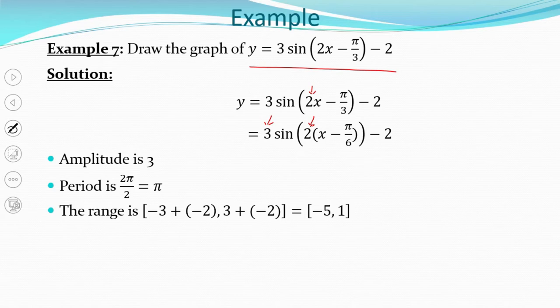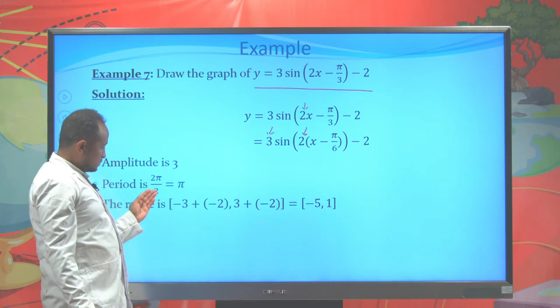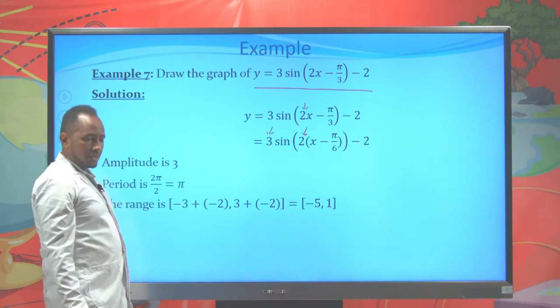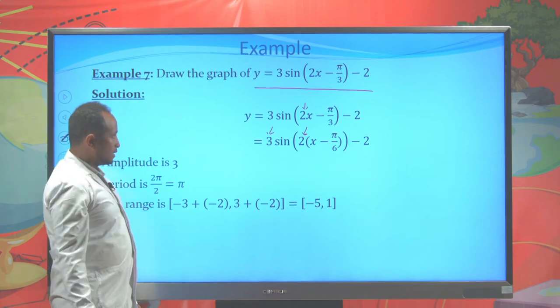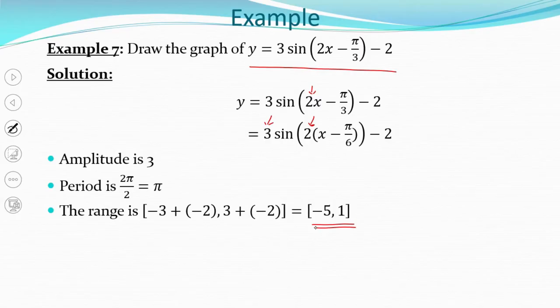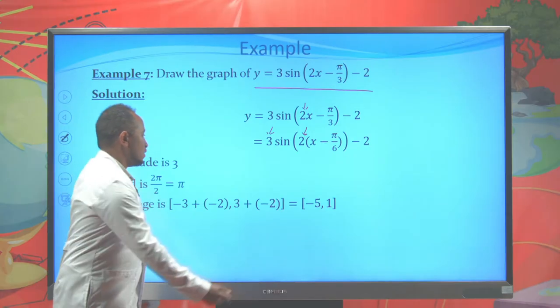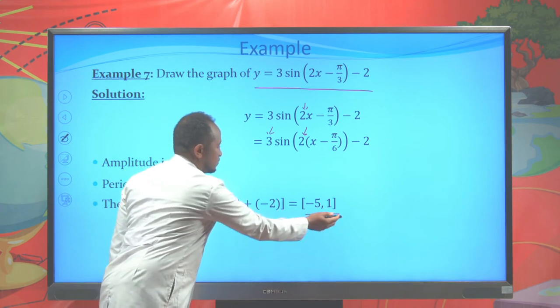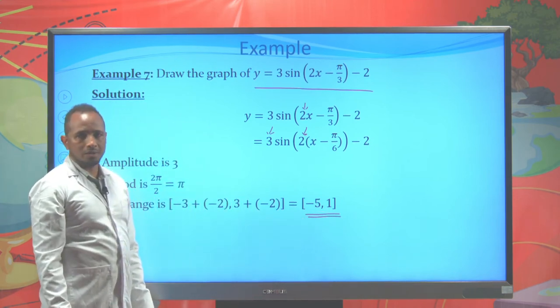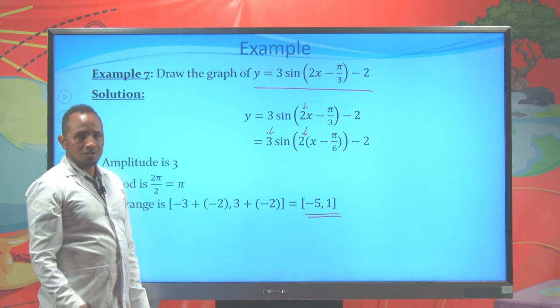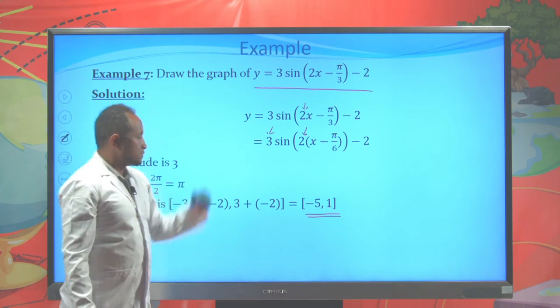The period is π. The range: c is −2 here, so the range is (−3 + (−2), 3 + (−2)) = (−5, 1). The range of this function varies from −5 up to 1. Now let's draw the graph of this expression.